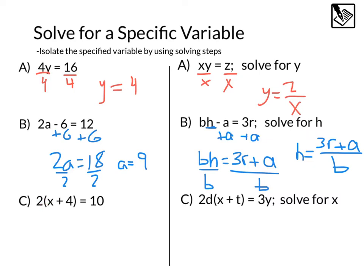Last example, example C. Here we have 2 times x plus 4. Now oftentimes, you might say the best strategy here would be to distribute, but we could also divide by 2 just to start things out. That's going to give us x plus 4 equals 5. Then we could subtract 4 from both sides, and we will get x equals 1.